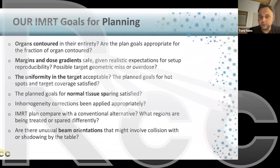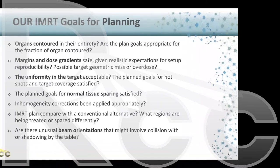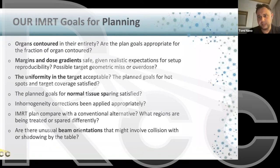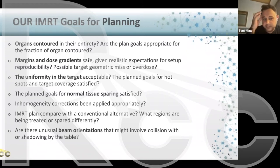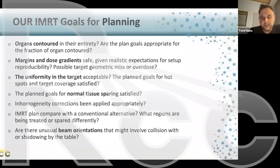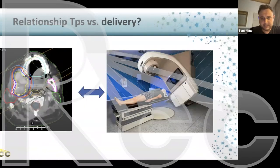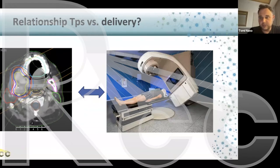When looking at an IMRT plan, always consider the entirety of the plan before jumping into IMRT components. That includes margins being applied and dose gradients. Because the dose is going to be so conformal, all of these aspects are important — uniformity in the target, hotspots, and whether coverage will be satisfied. Normal tissue sparing, even if there isn't a dose constraint, is still an important consideration. Those are often called dose fingers — certain dose lines spilling into normal tissue. Isodose lines are very important to consider, and inhomogeneity corrections must be properly applied by the treatment planning system.